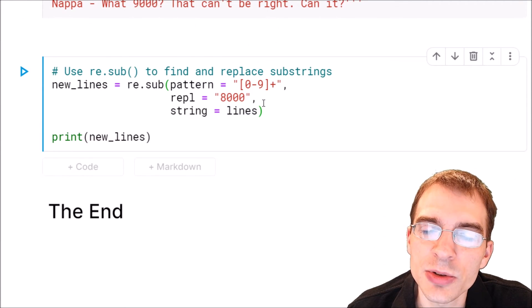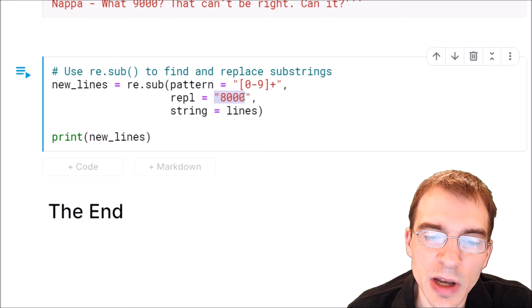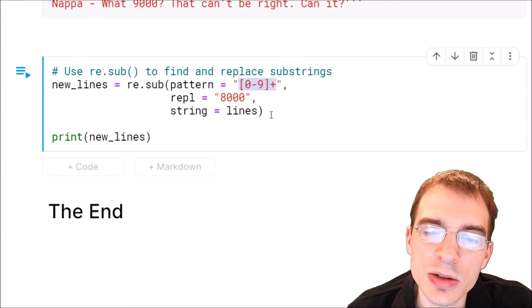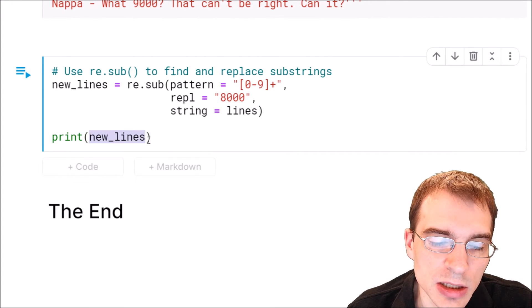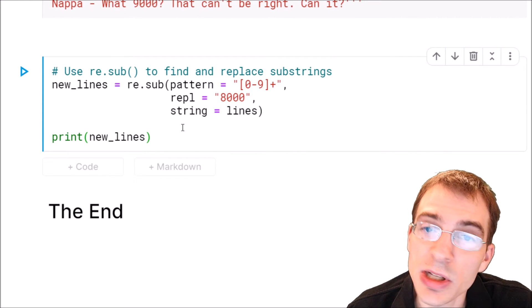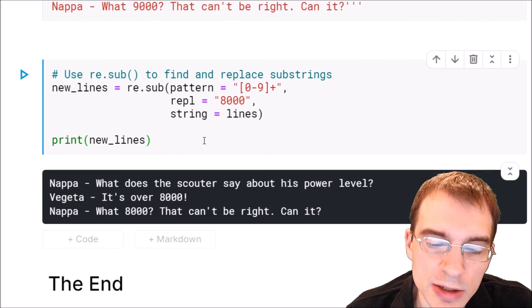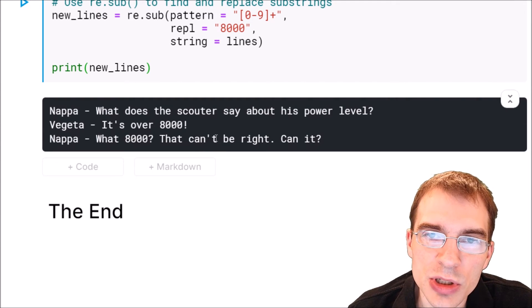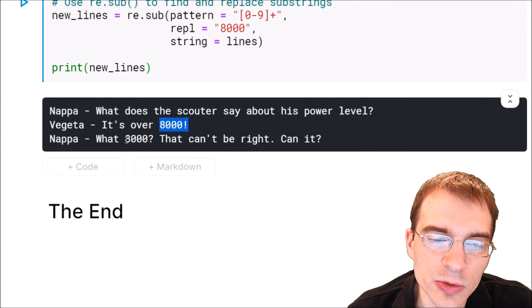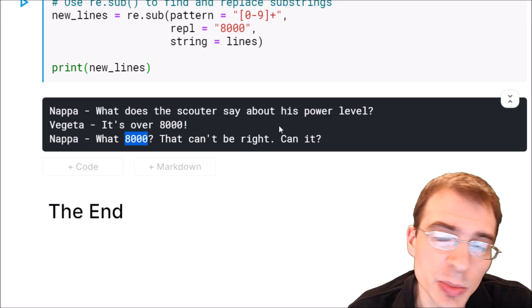And when we run this it will do the substitution of this value anywhere this match occurs. When we print new lines again it should have replaced all those 9,000s with 8,000. As you can see in the printed output here, those two substrings 9,000 now read 8,000. So we successfully replaced them.